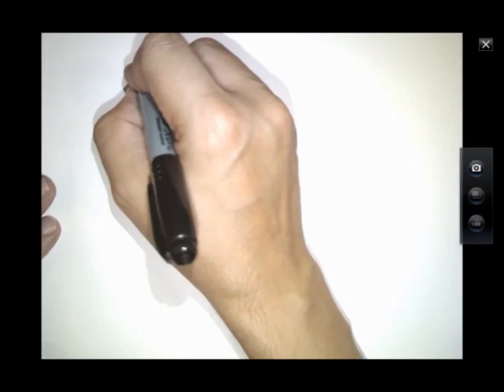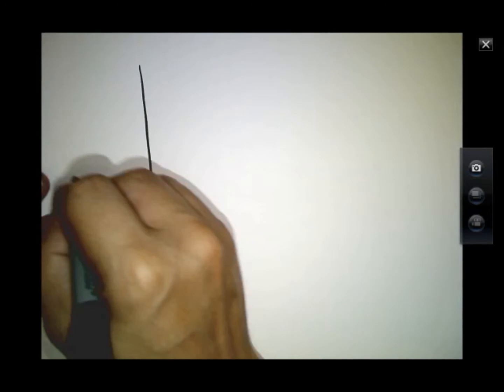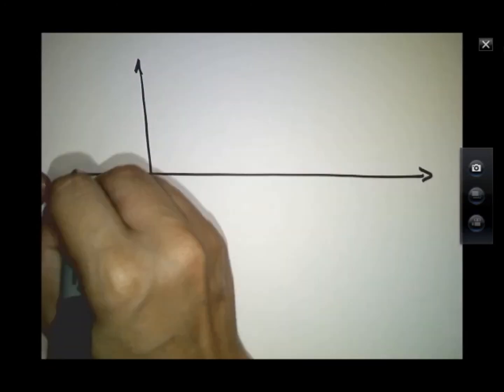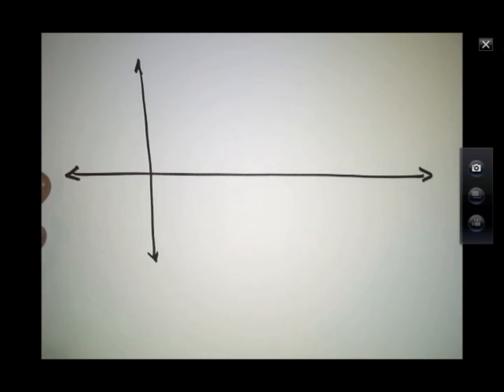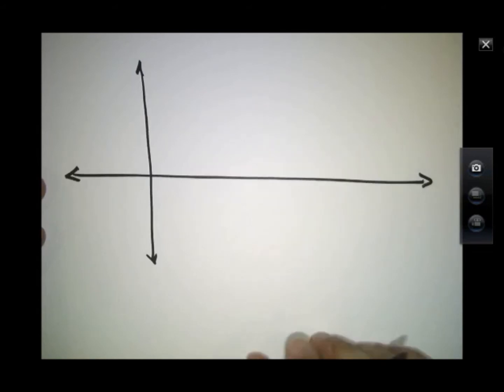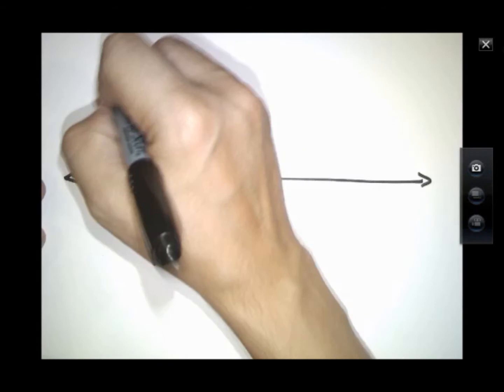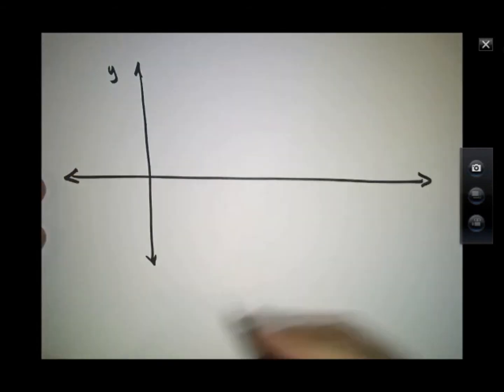If we were to graph these functions, let's think about what they might look like. I'm going to graph on the vertical axis y, on the horizontal axis I'll graph theta. I'll do this in degrees just to make it easier on ourselves.